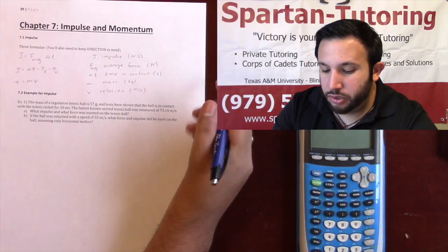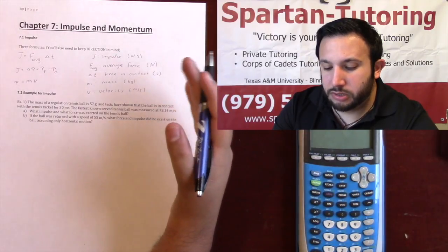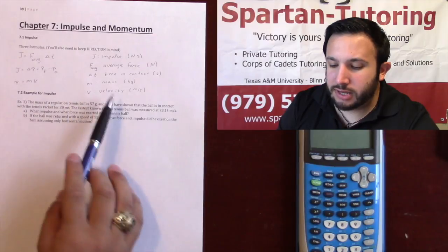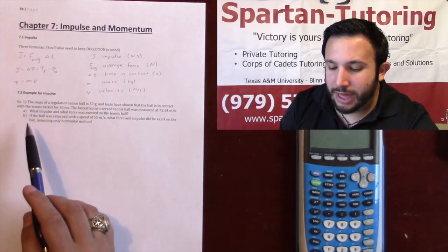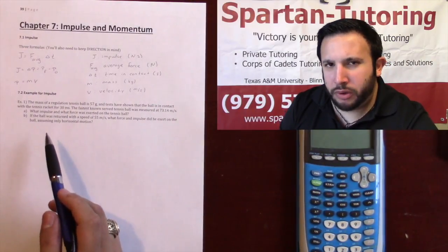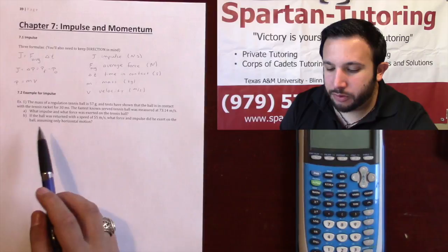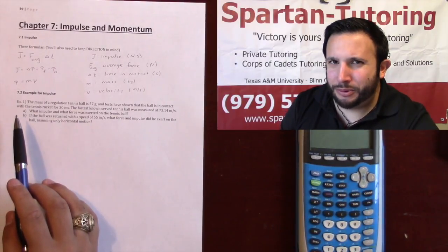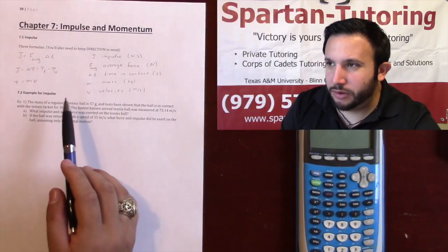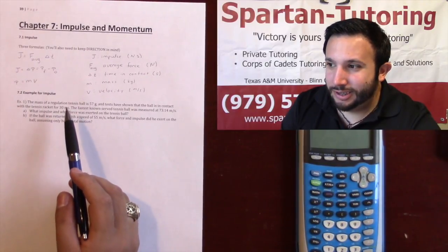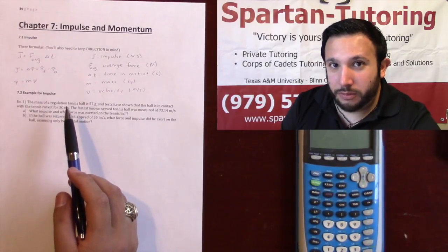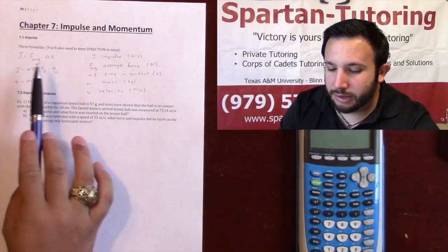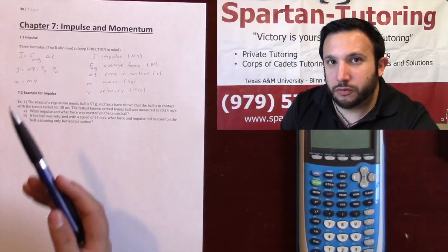In this video we're going to talk about impulse. The letter for impulse is J — just as a heads up, because it can be hard to find on a formula sheet. Now there are two formulas for impulse.